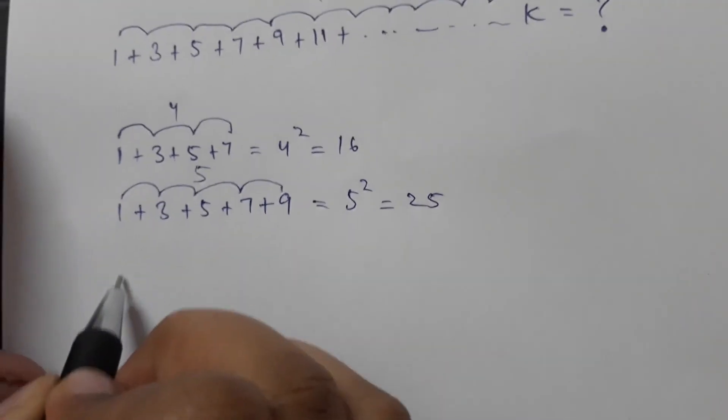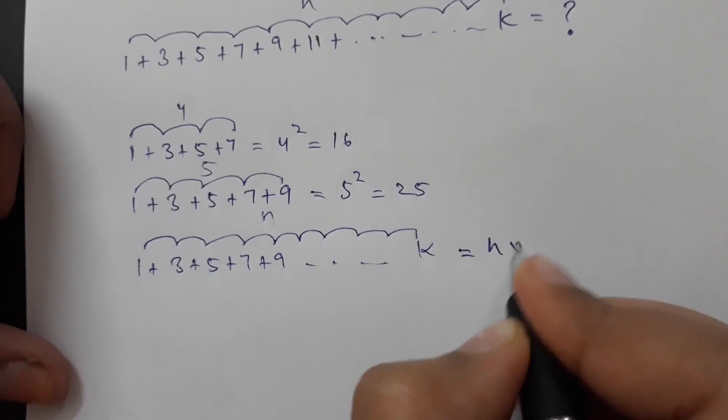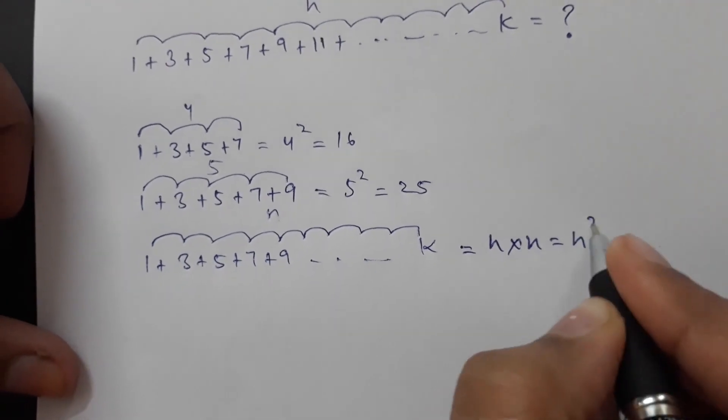Similarly, the sum of the first n odd numbers would be n into n, that is n square.